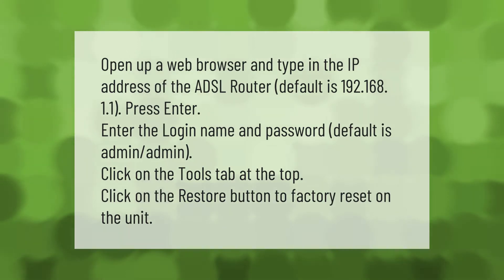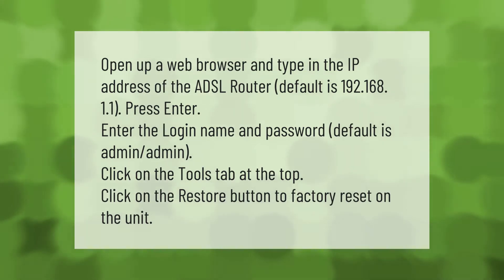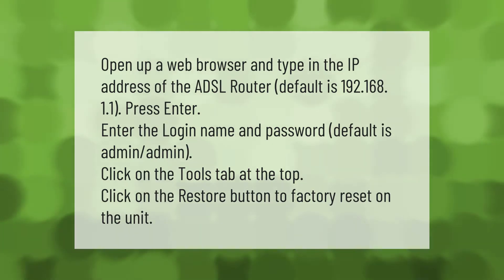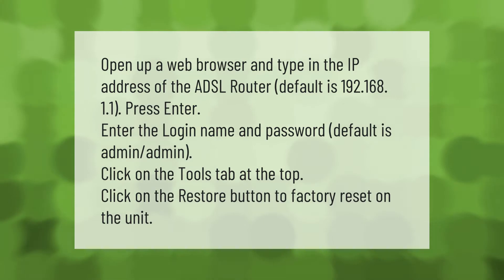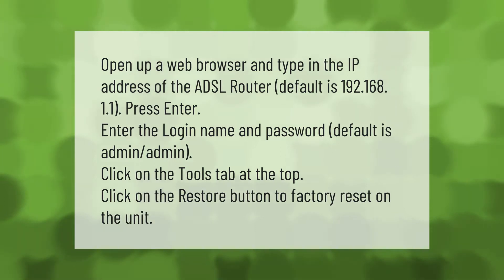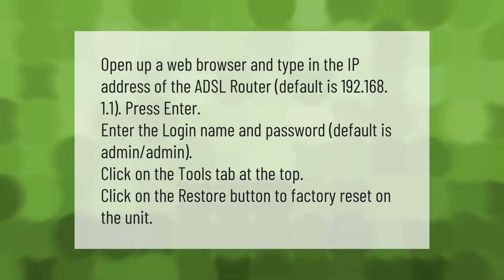Open up a web browser and type in the IP address of the ADSL router — default is 192.168.1.1. Press Enter, enter the login name and password (default is admin/admin), click on the Tools tab at the top, then click on the Restore button to factory reset the unit.